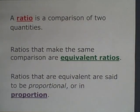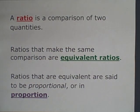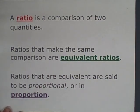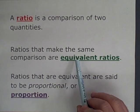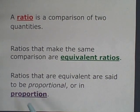Let's take a look at the definition of ratio. A ratio is a comparison of two quantities. When ratios make the same comparison they're called equivalent ratios. And when ratios are equivalent they are said to be proportional. These are three definitions you need to be familiar with: a ratio, equivalent ratios, and a proportion.